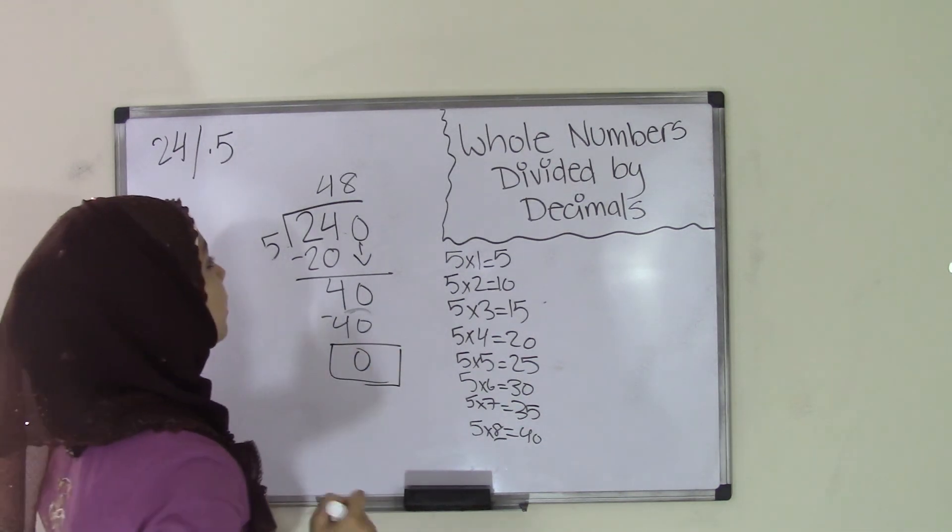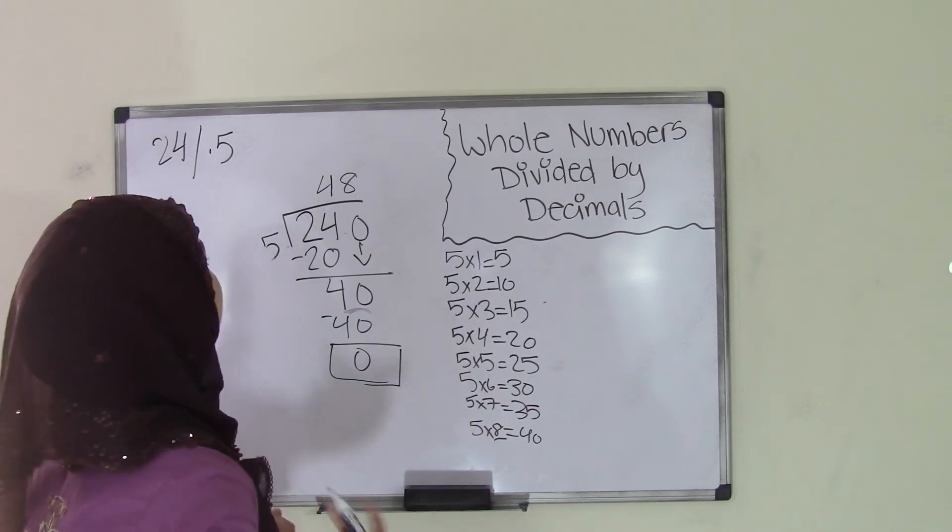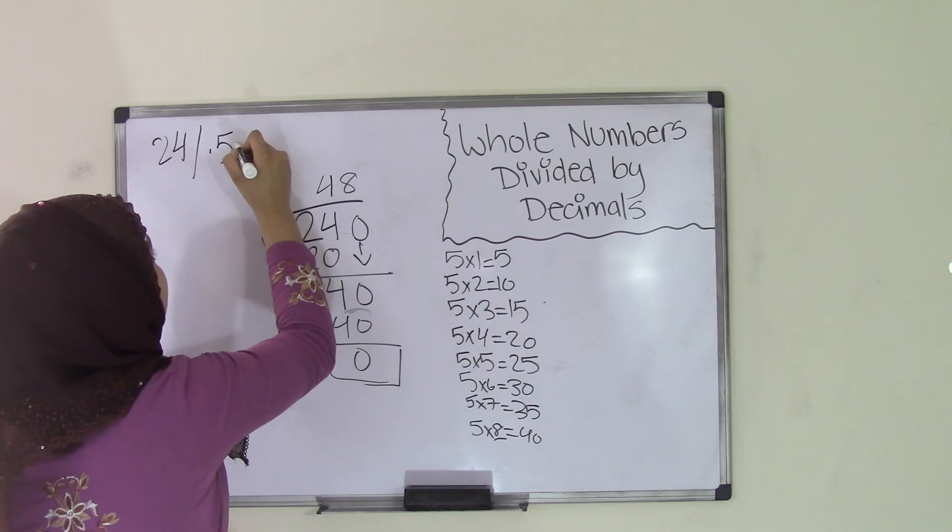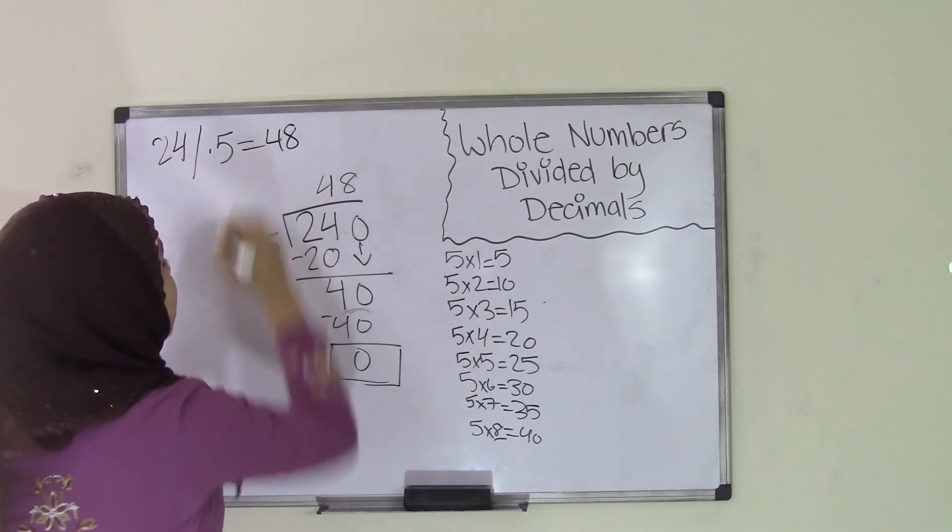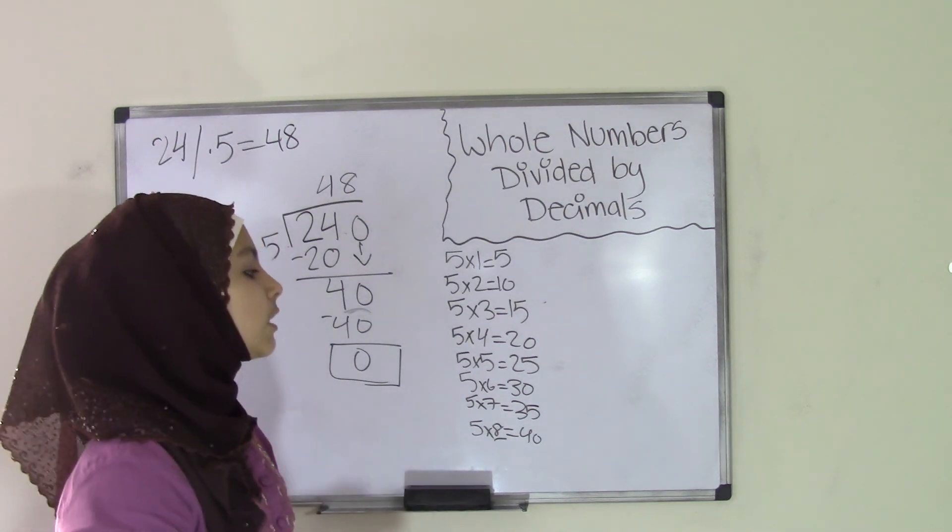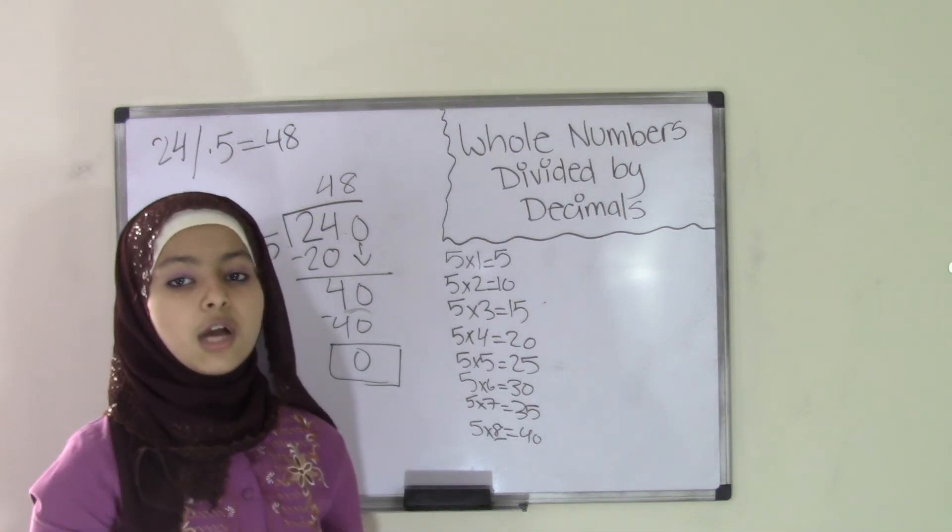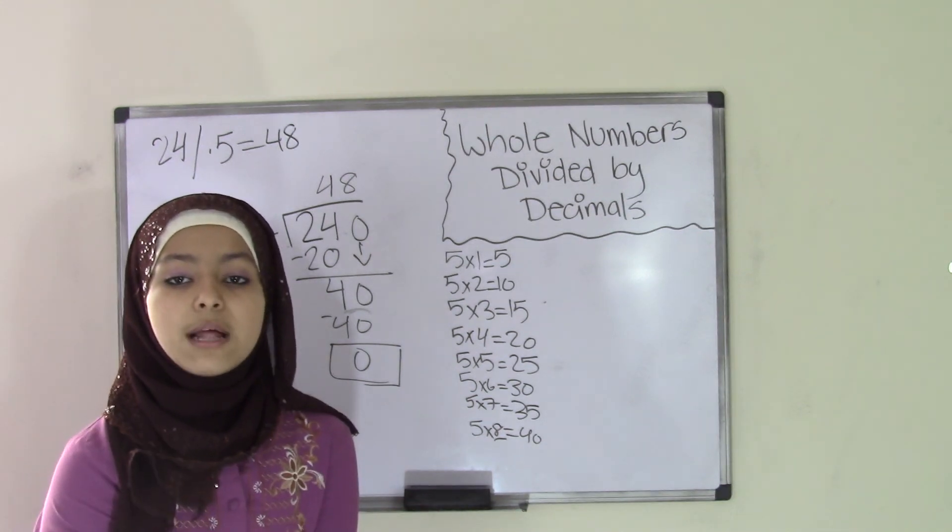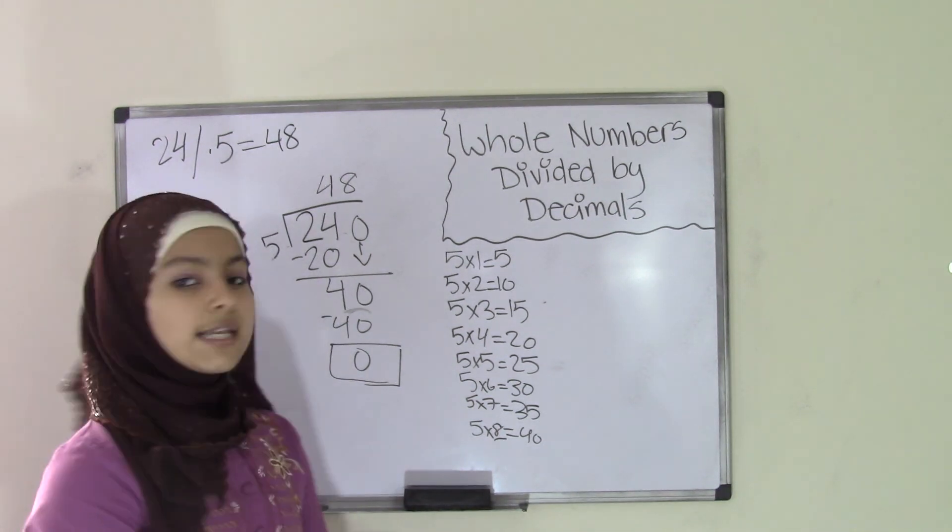So that means your quotient equals 48. That means from your original problem, which is 24 divided by 0.5, the quotient equals 48. So I hope you guys understood this topic, whole numbers divided by decimals. Now if you want to find extra practice problems on this topic and also other topics and also further coming up topics, you can always visit our blog at brilliancismathclub.com. And we'll see you guys next time. Bye.